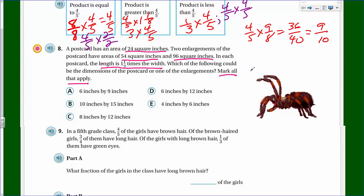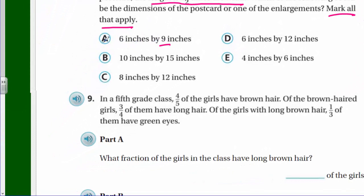Area equals length times width. Six inches by nine inches equals 54 square inches - and we do have 54 square inches. It also says the length is one and a half times the width. Is nine one and a half times six? Half of six is three, and six plus three is nine - yes! Nine is one and a half times six, and six times nine is 54 square inches. That's true.